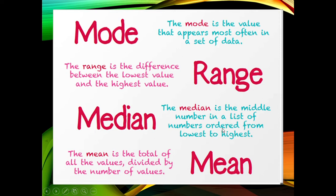Median is the middle number in a list of numbers ordered from lowest to highest. So if you have numbers, you arrange them according to magnitude from lowest to highest. The middle one is the median. The mean is the total of all the values divided by the number of values.